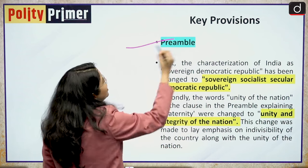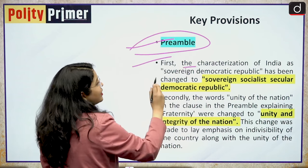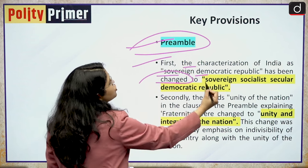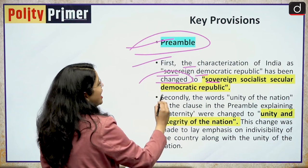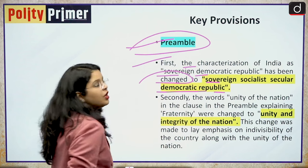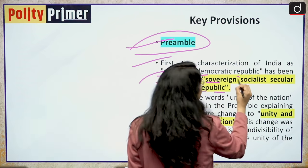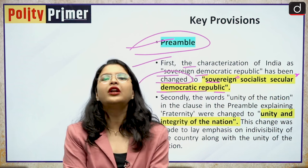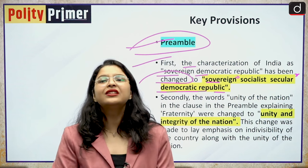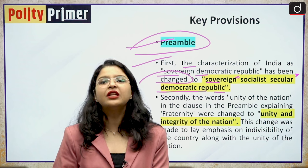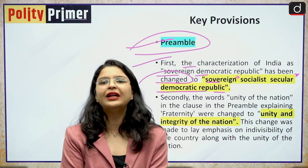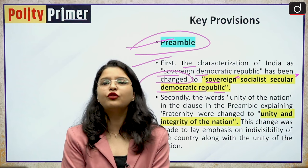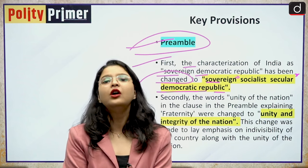Let us analyse the key provisions introduced in our Indian constitution through this amendment. Firstly, in the case of the preamble, the categorisation of India as a sovereign democratic republic was changed to sovereign socialist secular democratic republic. So basically, the words 'socialist' and 'secular' were added to the Indian preamble by the 42nd Constitutional Amendment Act. This is also in challenge before the Honourable Supreme Court of India as of now, and we have discussed this in detail in our Politi Primer series.